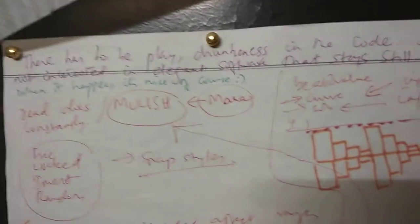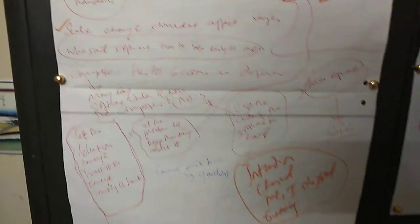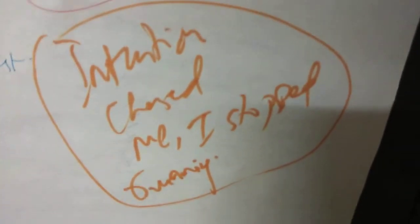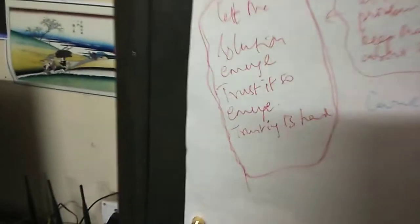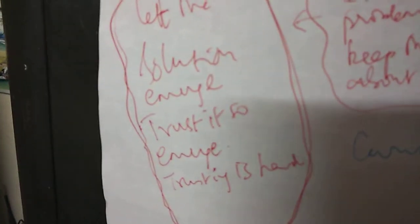So, this is coming for release 38. It's like a mix of what I want to do — a lot of ideology on this one. For example: intuition chased me and I stopped running. And this is: let the solution emerge, trust it to emerge, but trusting is hard. Then this one is: let the problem lie, keep thinking about it. And that kind of leads you to this.